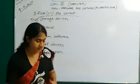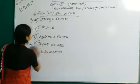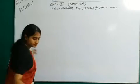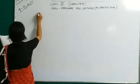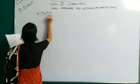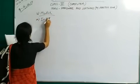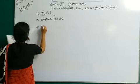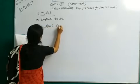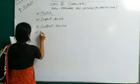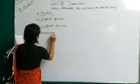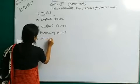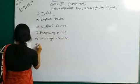Next — match the following. Number 4: Match. Option A — input device. Number B — output device. Number C — processing device. Number D — storage device. And number E — operating system. Match these with the options given on the right side.